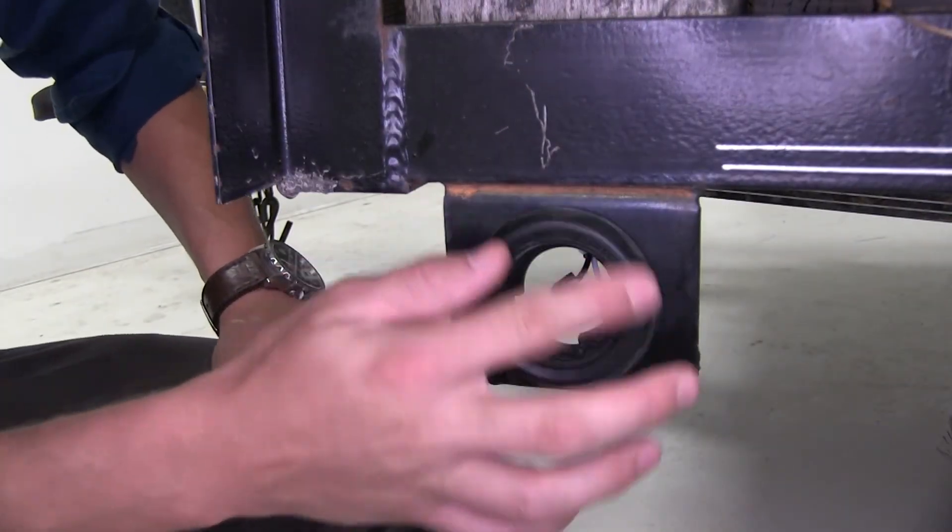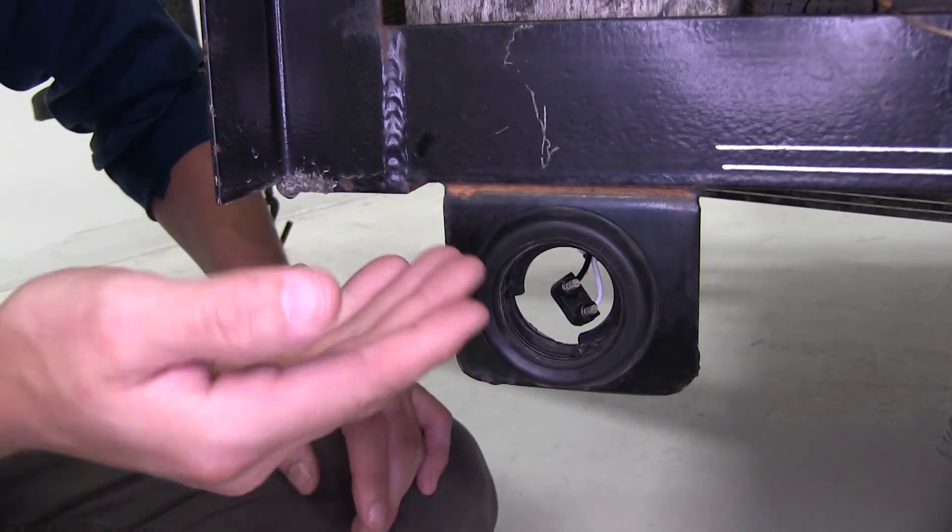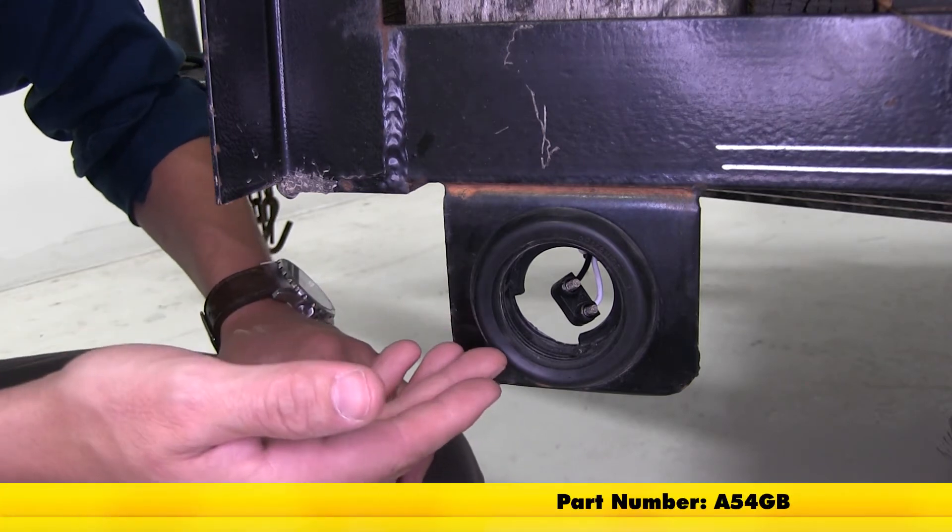Now our new light does not come with a grommet, but if you need to replace yours, you could pick up a new one with part number A5-4GB.